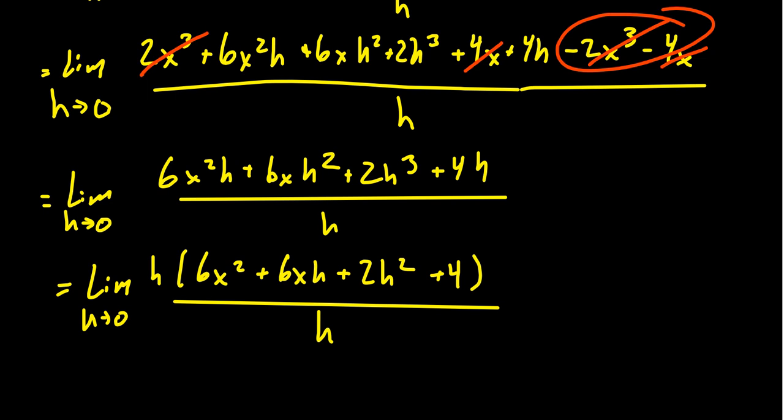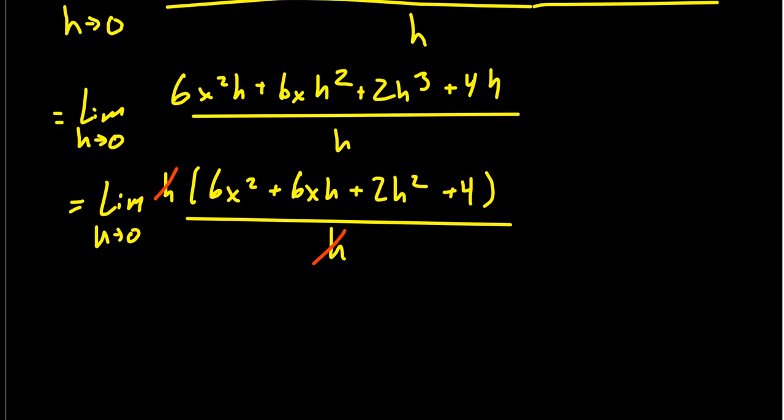Now the common factor of h in the numerator cancels with the h in the denominator, for which then this limit we see is going to be the limit as h goes to 0. We're going to get 6x² + 6xh + 2h² + 4.